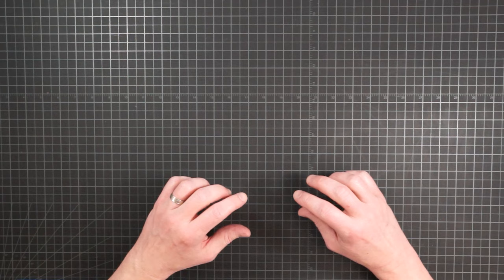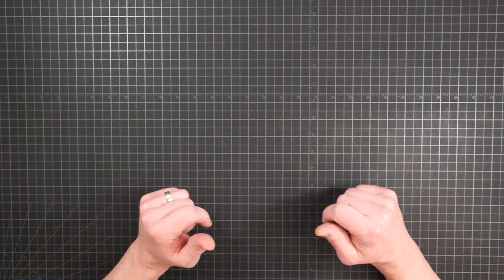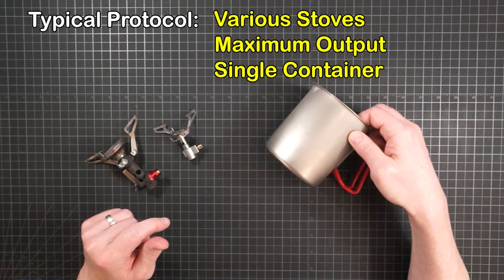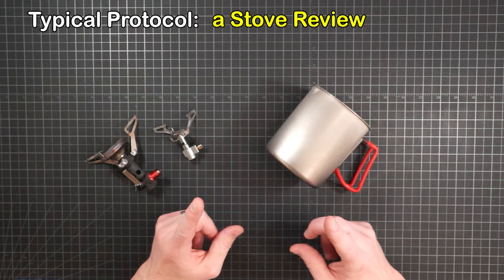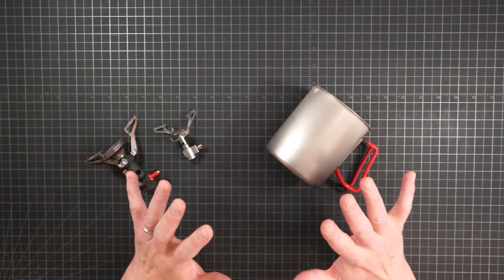Stoves are most often evaluated by how quickly they can boil a particular amount of water, and those tests are always run with a stove wide open at maximum flame. Additionally, a standardized container is used. So the protocol is essentially various stoves are compared using one flame level, maximum, against a single pot type. Now it makes sense for them to test this way because of the last thing they all have in common: what they are doing are stove reviews. And that's an important distinction I wanted to make at the beginning.